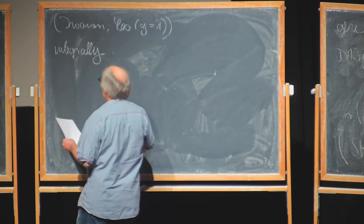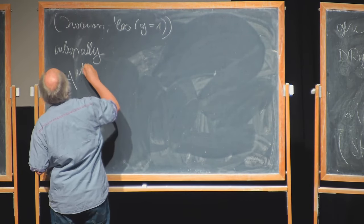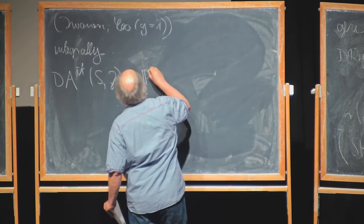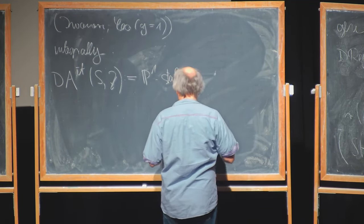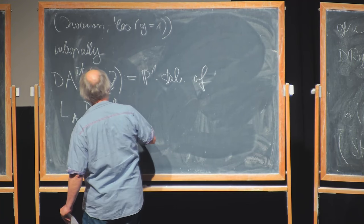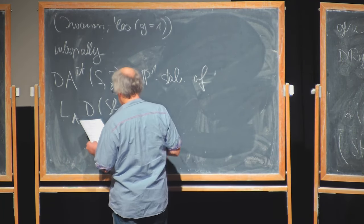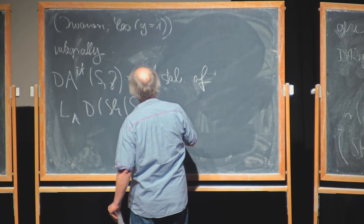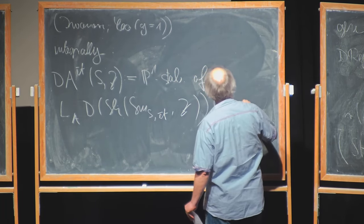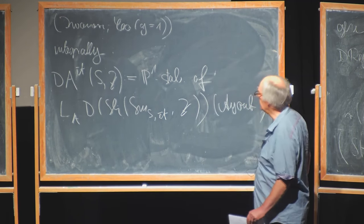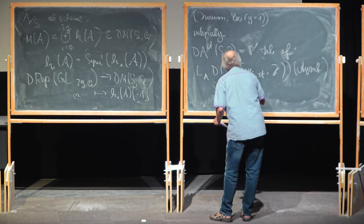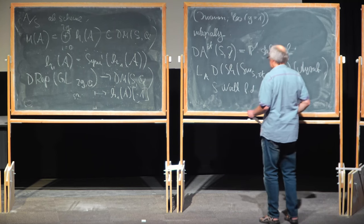And this will take place in the étale motivic category DA_et(S). That's defined to be now the étale motivic category, the P1-stabilization of the A1-localization of the derived category of étale sheaves on smooth schemes over S. That's the usual definition; this goes back to Ayoub. And also Cisinski-Déglise did work on étale motives. From now on I want to assume S Noetherian, just a technical condition, finite dimensional and excellent, so that a theorem of Ayoub will be true, which I'll use later.